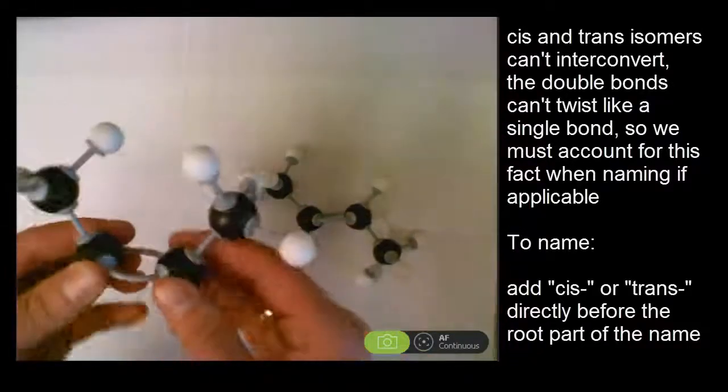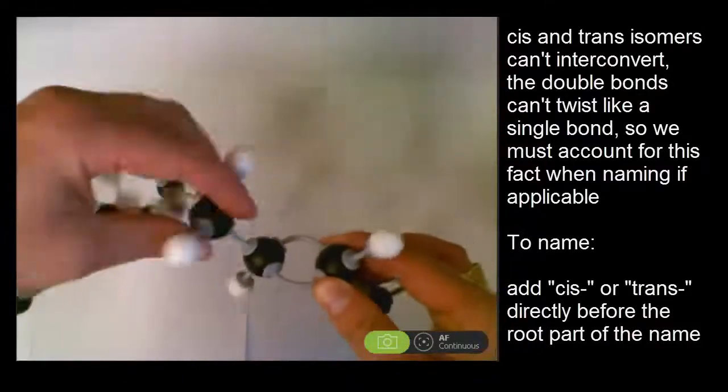So, to name cis/trans isomers, add cis or trans directly before the root part of the name.